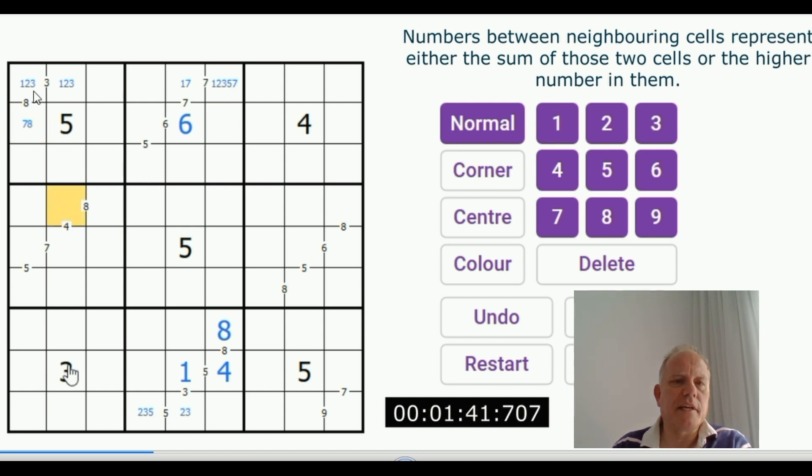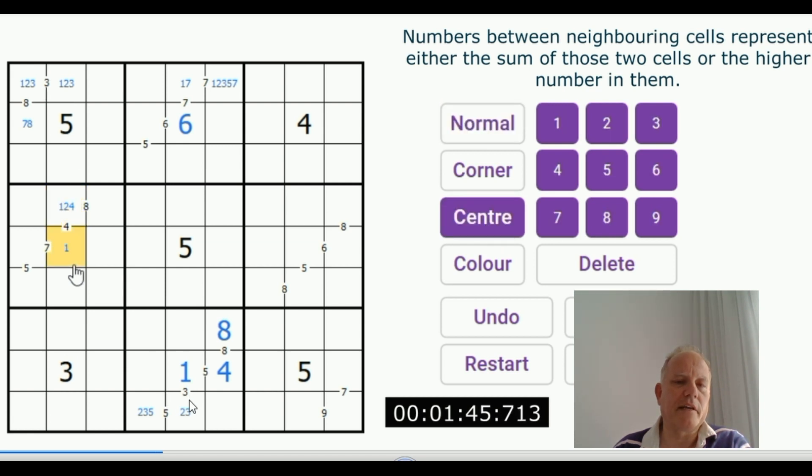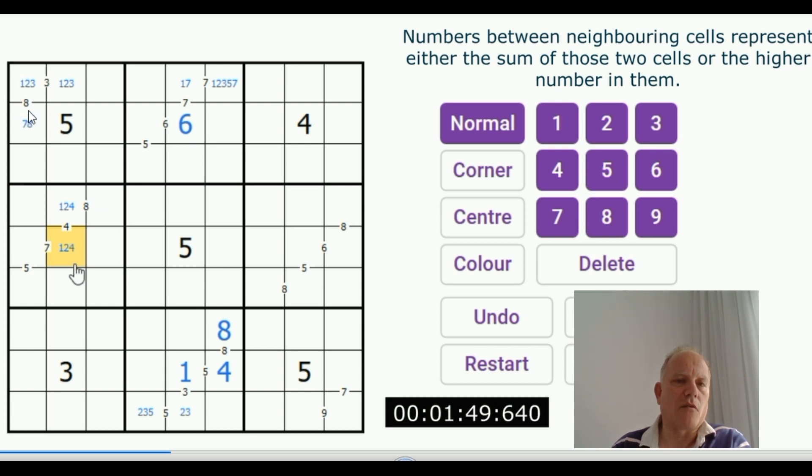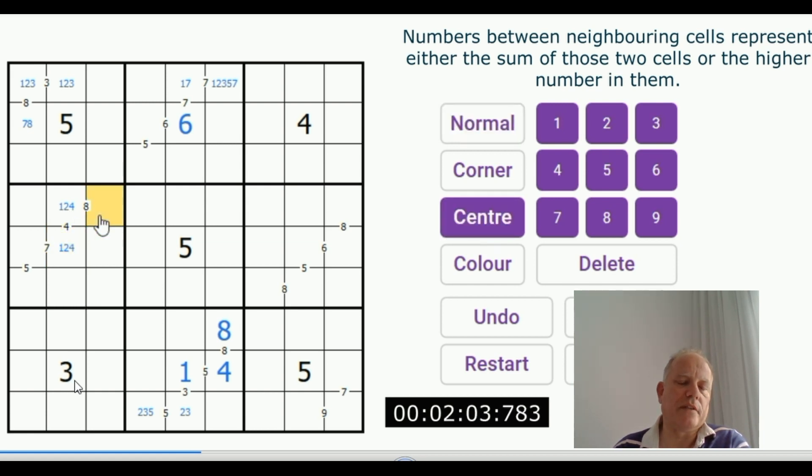Now I'm filling in the possibilities. Three is a very limiting possibility as we saw down here. It can only be either one and two, one and three, or two and three. So the digit possibilities are only one, two, or three. The pencil marks I'm filling in are all the possibles. Here again, four here can't be three and one because there's a three in the same column, so it must be a four with either a one or a two.